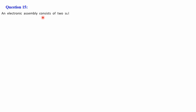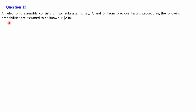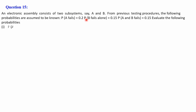Question number 15: an electronic assembly consists of two subsystems A and B. From previous testing, the following probabilities are known: P(A fails) = 0.2, P(B fails alone) = 0.15, P(A and B fail) = 0.15. We need to evaluate: P(A fails given B has failed) and P(A fails alone).